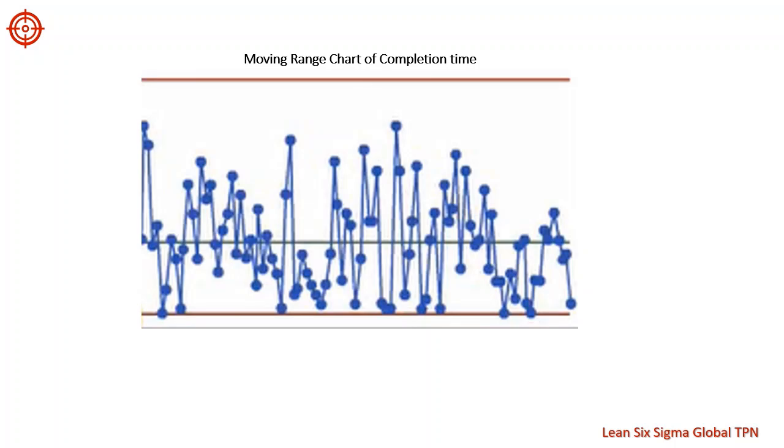Remember, a process is out of control if any points fall outside of the control limits or if a pattern is evident in the control chart. So here's an example. Does the MR chart indicate that process variation from contract to contract is in control? We can see here, because no moving ranges are outside of the control limits and no pattern exists, the variation is in control.